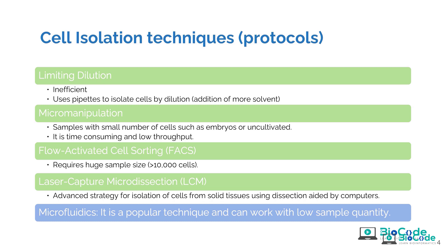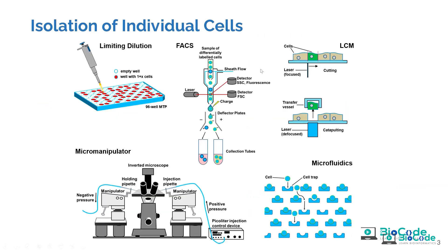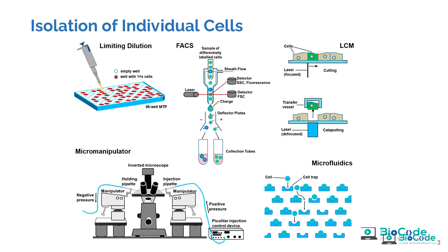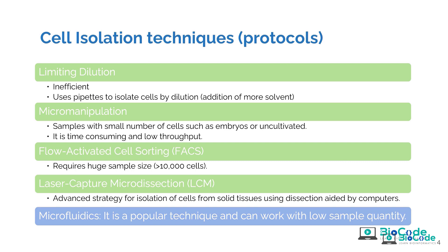Flow-activated cell sorting (FACS) requires a large sample size — more than 10,000 cells — and flows cells through a chamber where they are sorted, also utilizing a laser. Micromanipulation is used for samples with small numbers of cells, such as embryos or uncultivated cells, and falls under the umbrella of manual cell picking — it is very time consuming. Limiting dilution is also very inefficient, using pipettes to isolate cells one by one, and is the most time consuming of all these techniques.